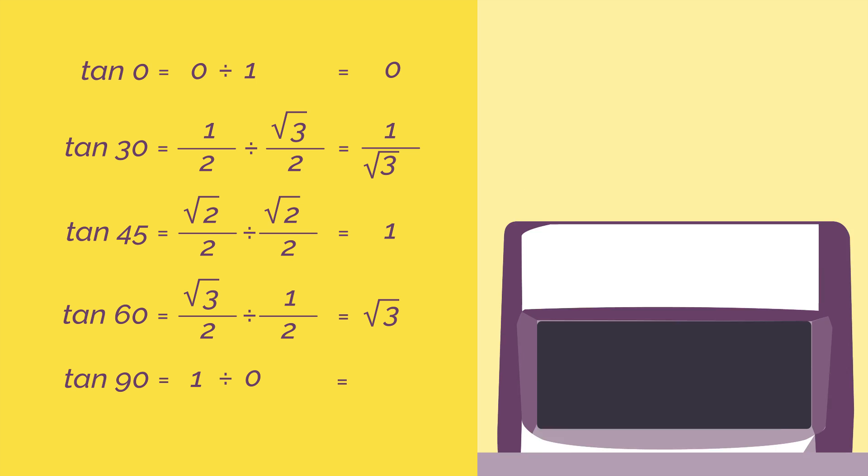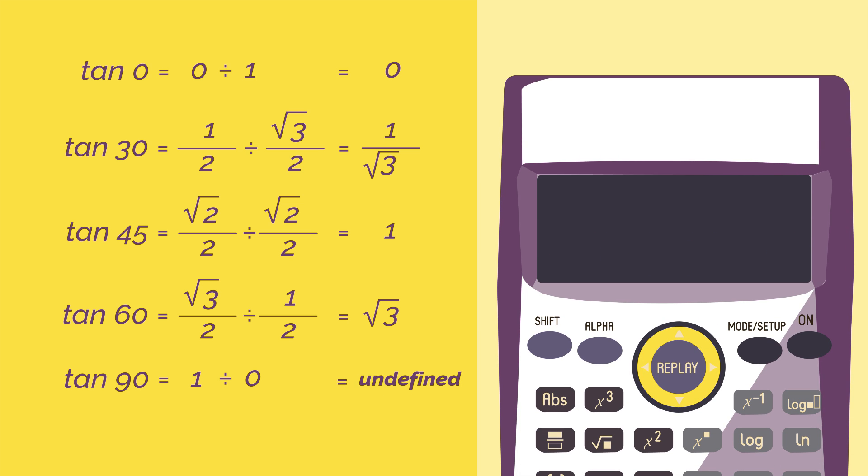And tan 90. Type into your calculator one divided by zero. And it will say math error. We can't do that. Right. So it wasn't that hard, was it?